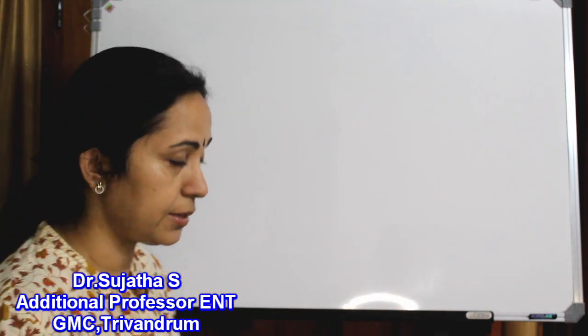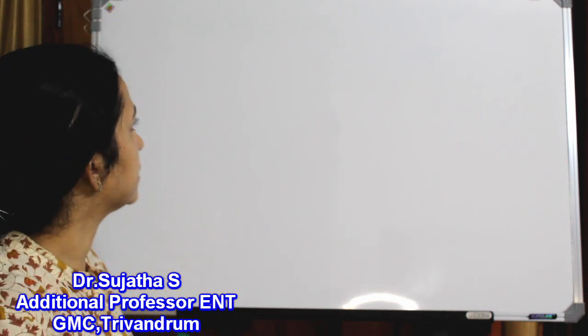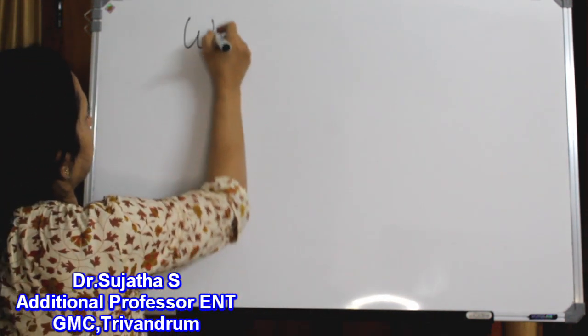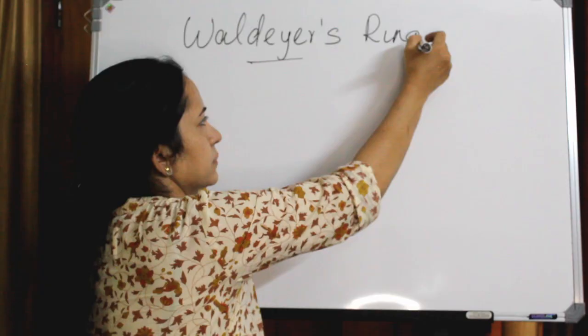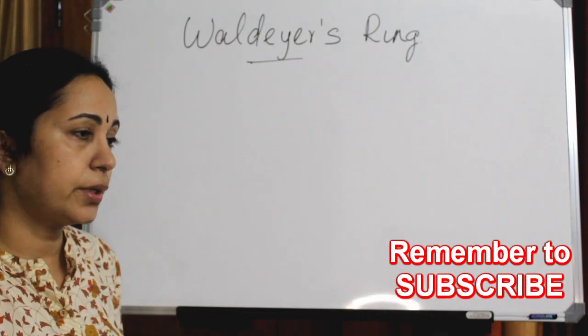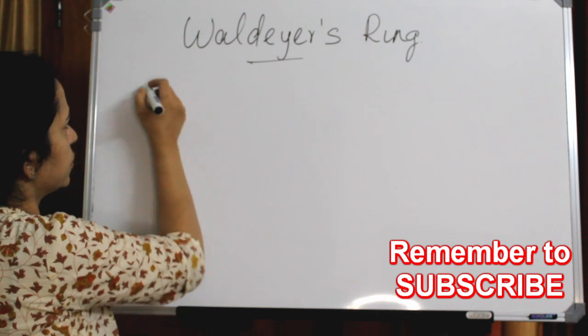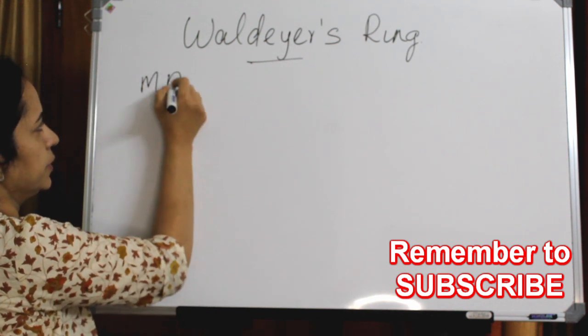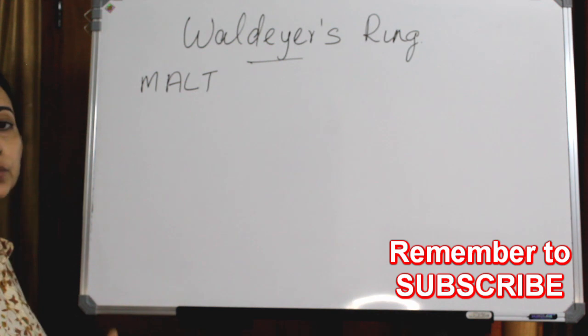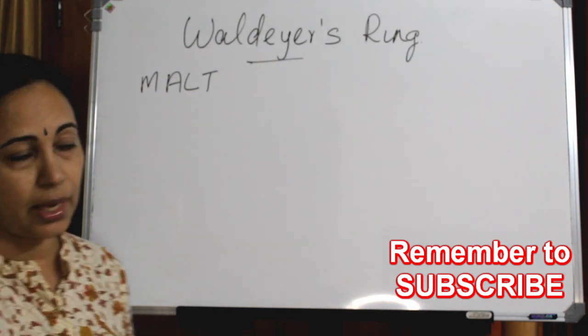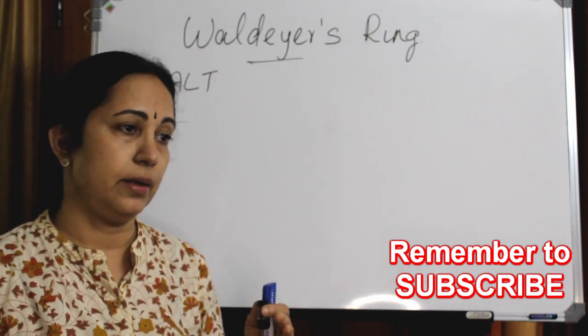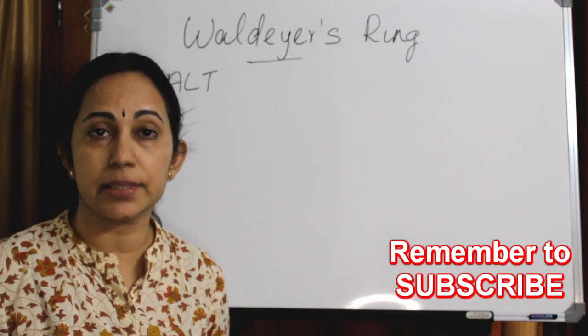This Waldeyer's ring is named after a German anatomist. As I already told you, this mucosa-associated lymphoid tissue is present throughout the mucosal lining of the body, and the name is different according to the regional anatomy.